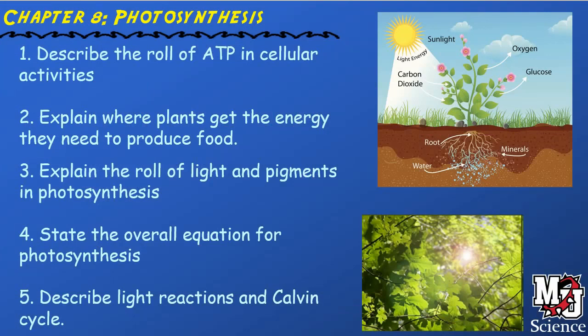Hello, today we're going to be talking about photosynthesis, the process through which plants harvest the energy of the sun. The ultimate goals in this particular chapter: we're going to talk about ATP and its role in cellular activities, explain where plants get the energy they need to produce food, explain the role of the light reactions and the pigments needed in photosynthesis, talk about the overall net chemical equation for photosynthesis, and describe the light reactions and the Calvin cycle.